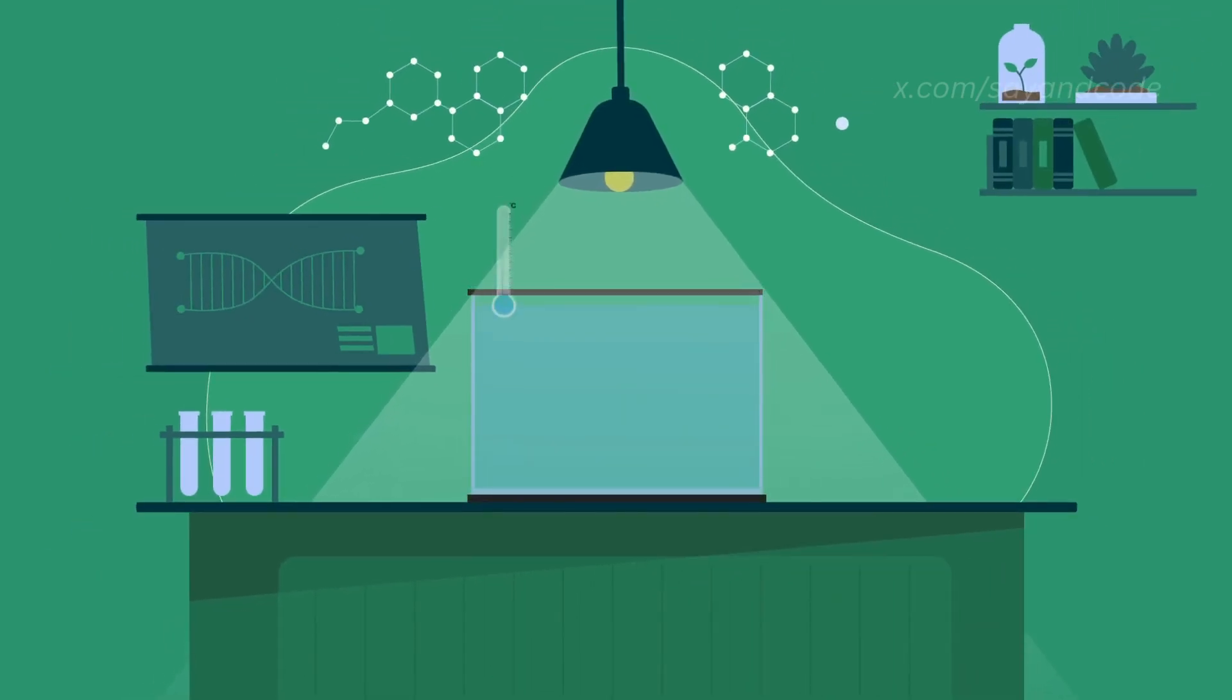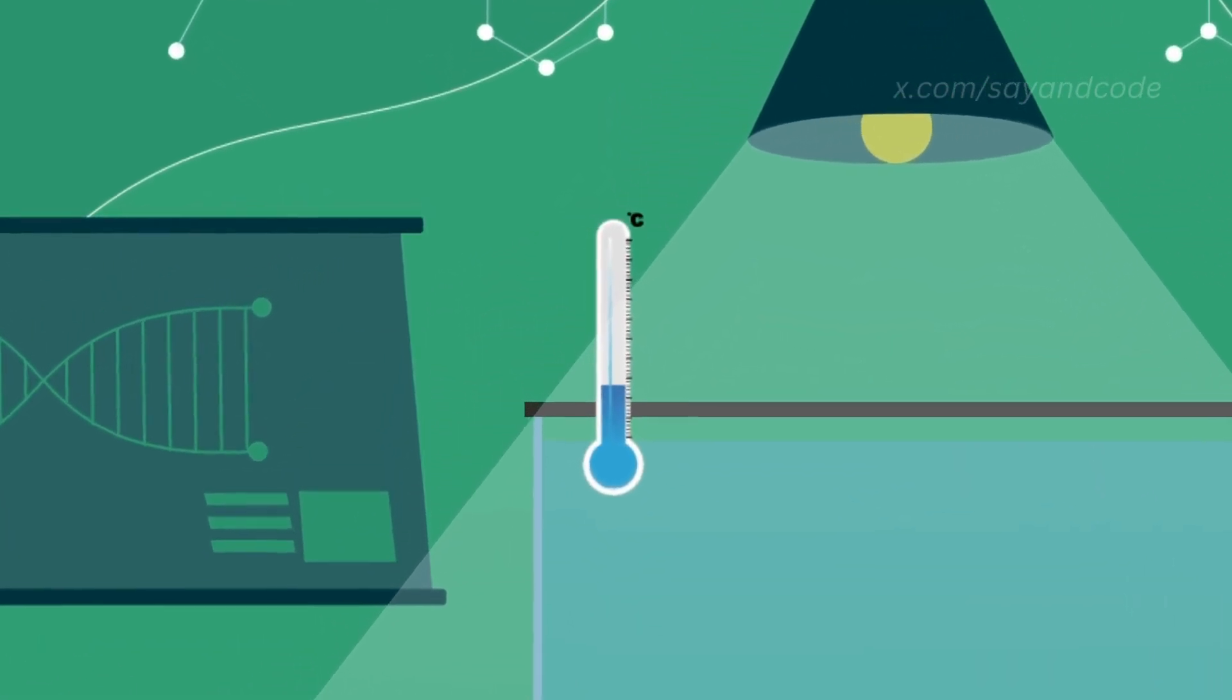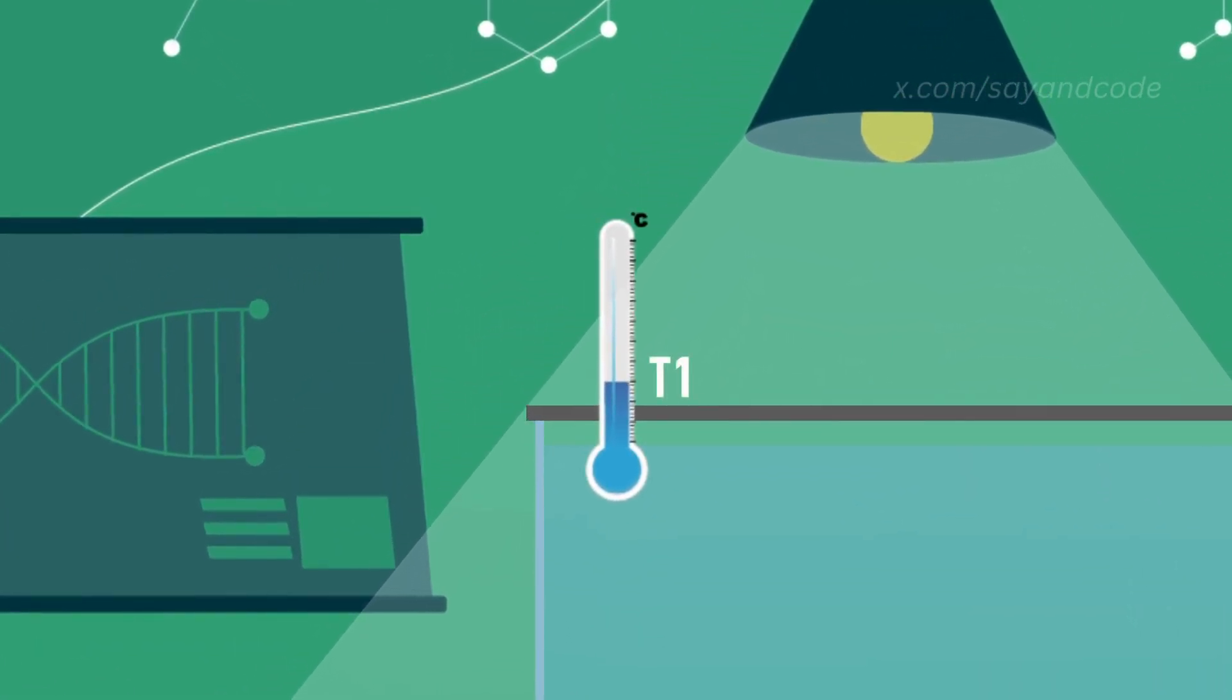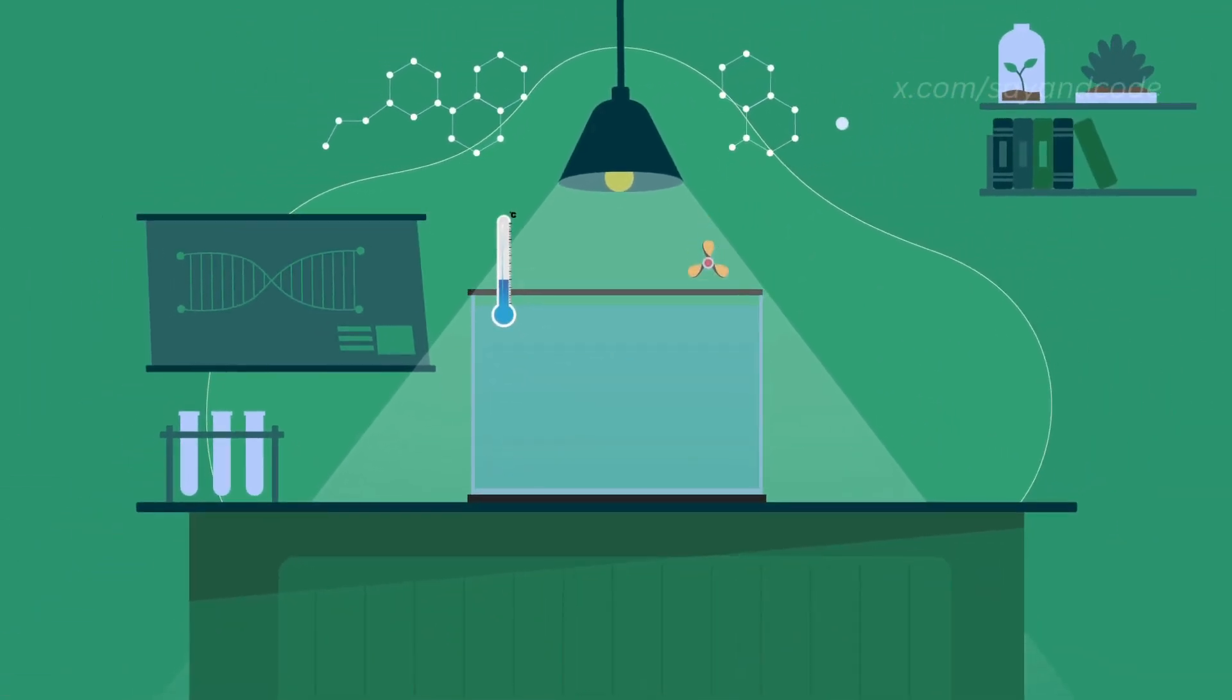In his experiment, he took a vessel full of water and fit a thermometer inside it. He then measured the temperature of the water before starting the experiment, at T1. Then, he put a small fan inside the water.